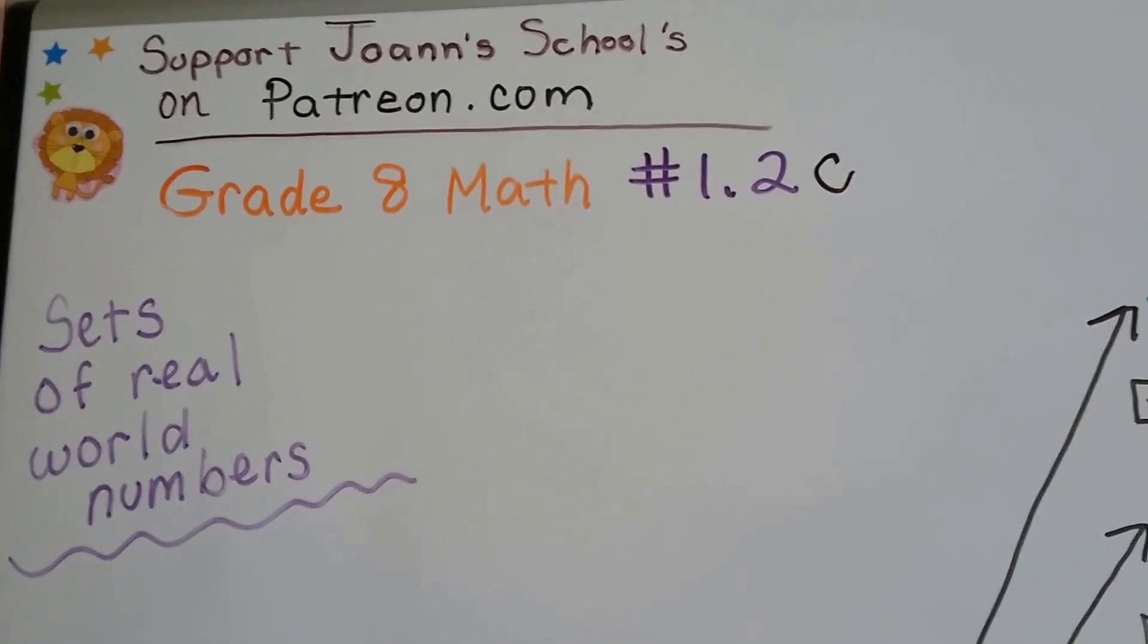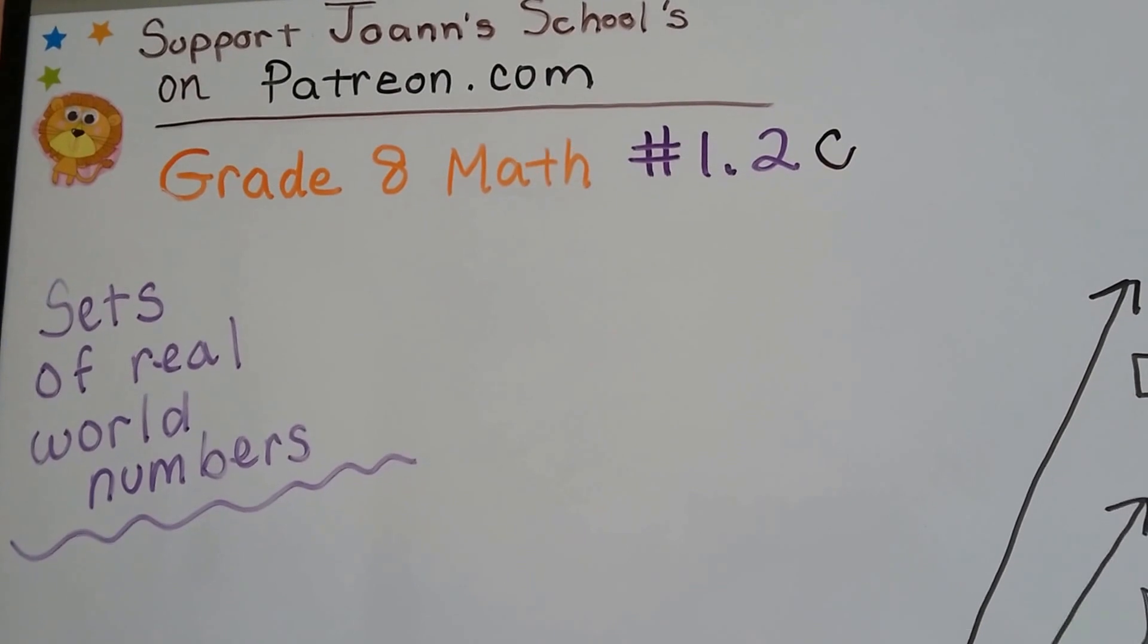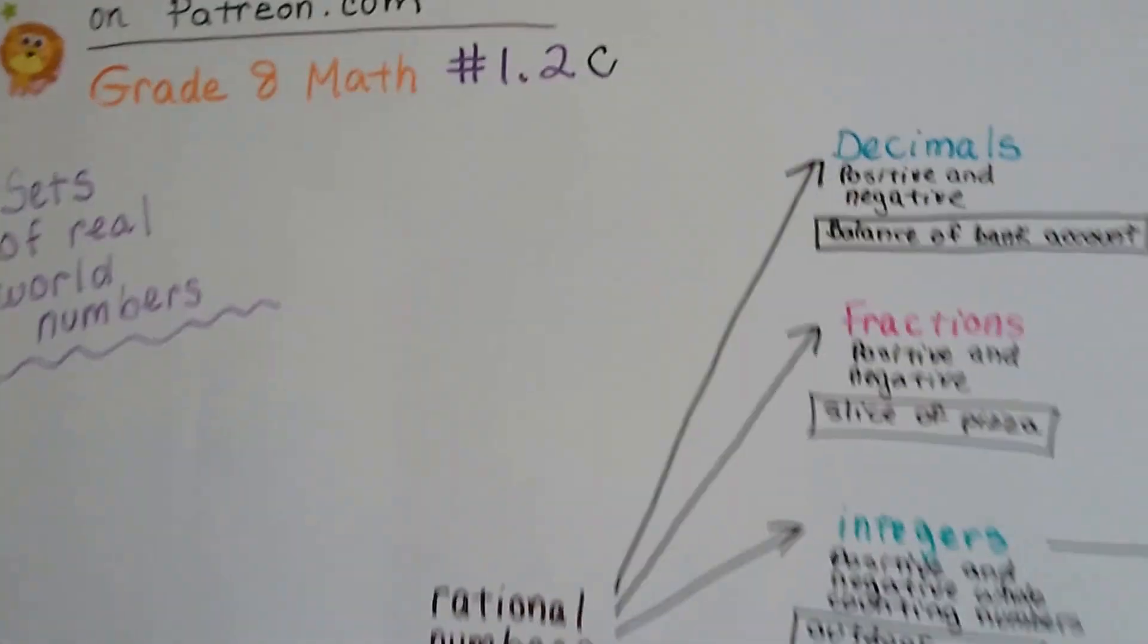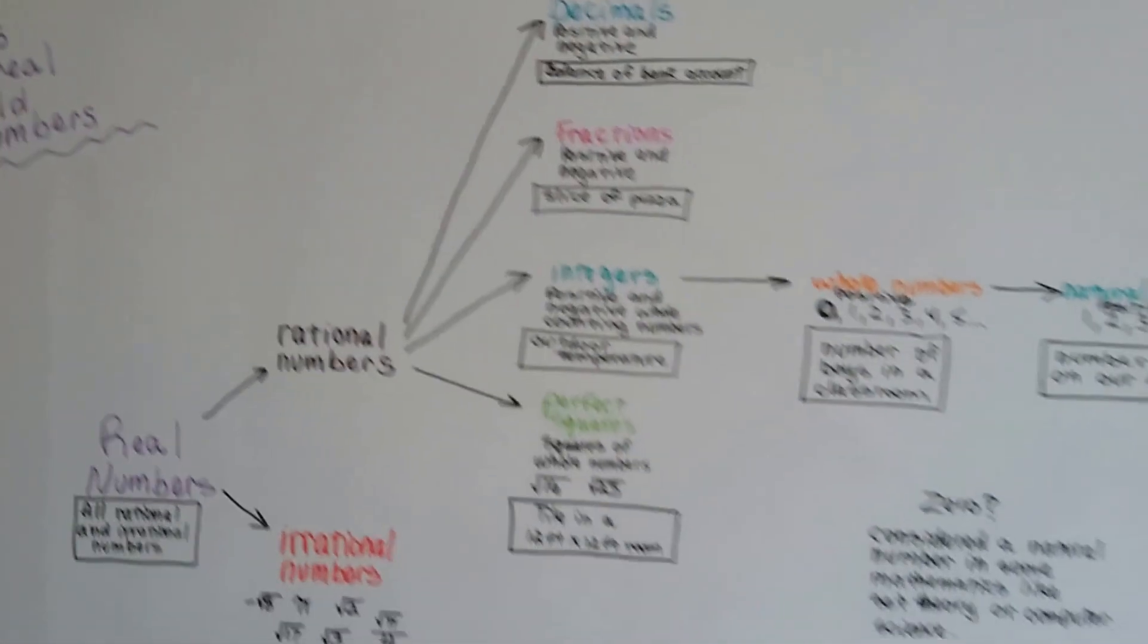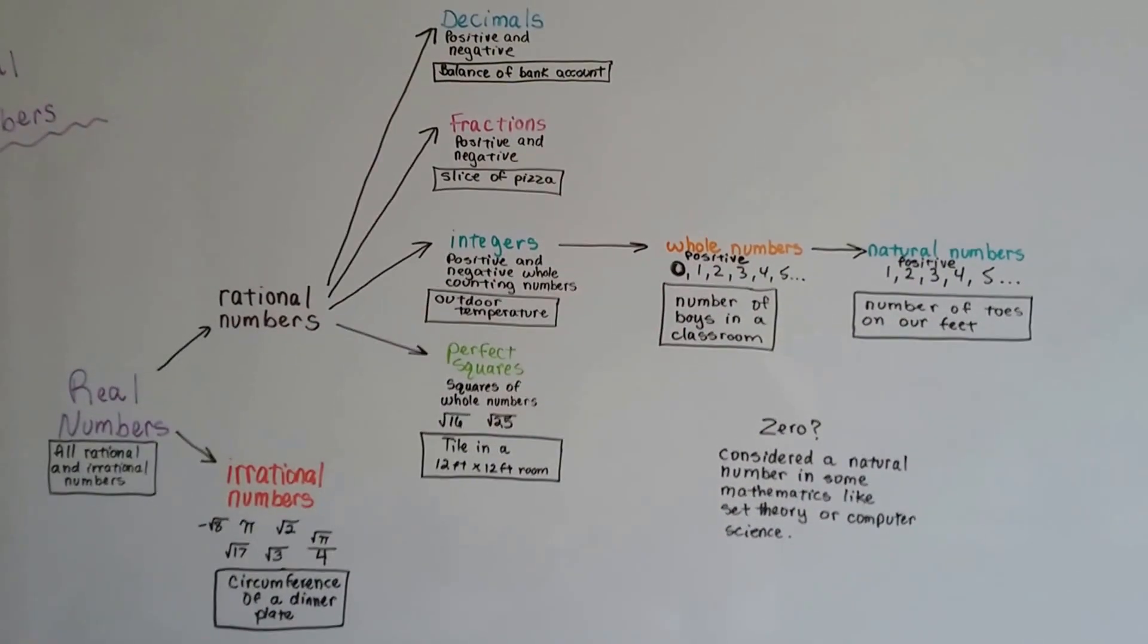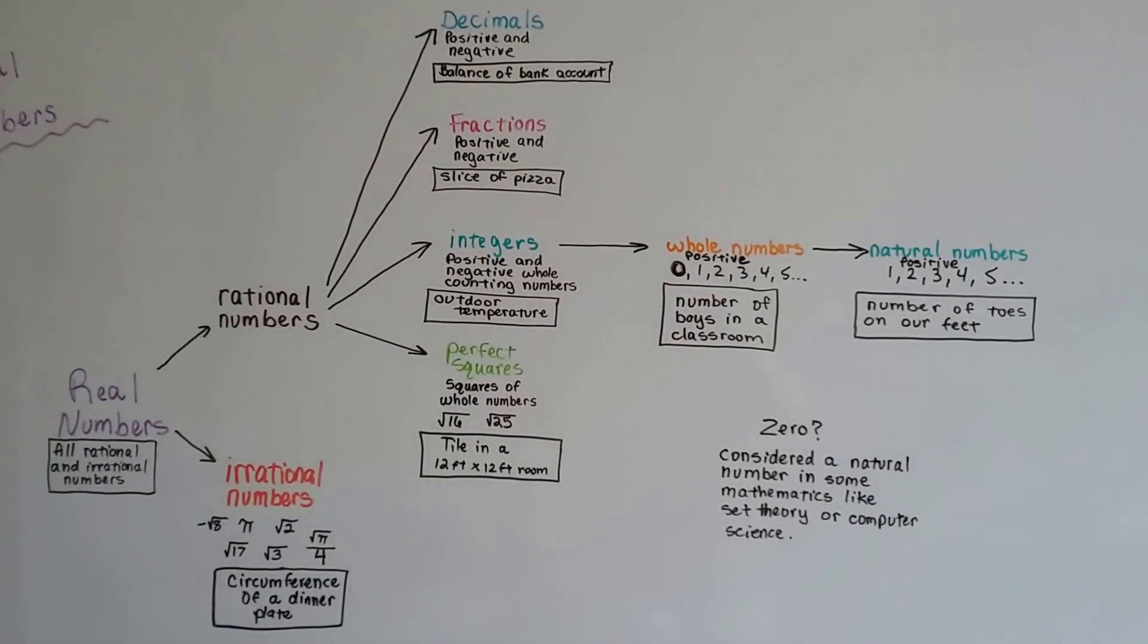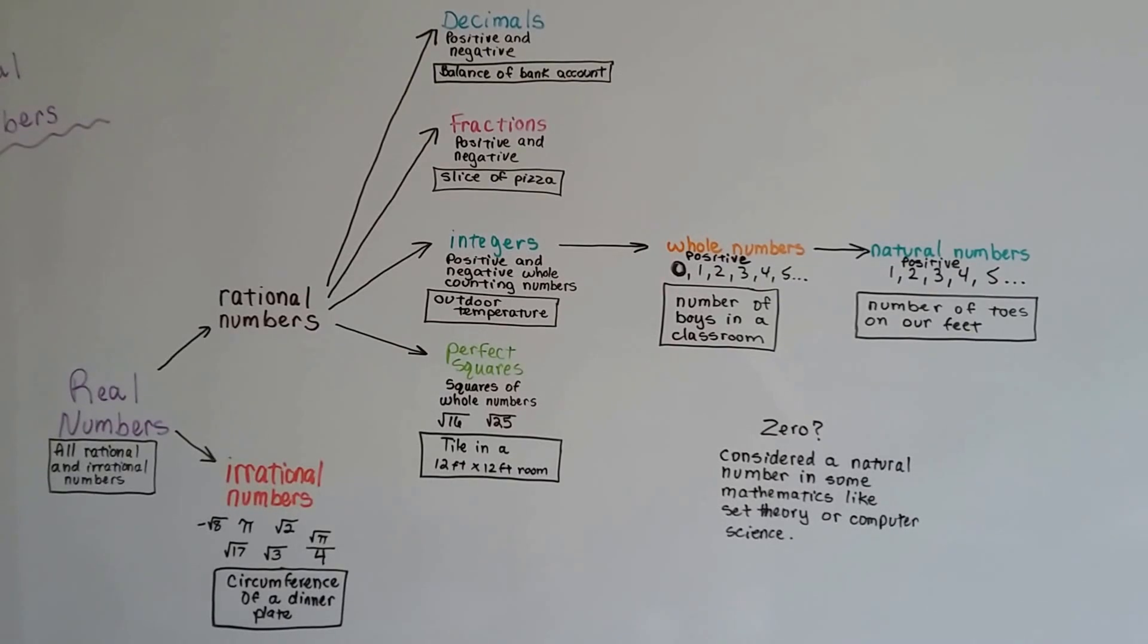Grade 8 math number 1.2c sets of real-world numbers. I made a chart similar to this yesterday and posted it on Twitter. This one's a little more detailed because it explains how each of these are numbers of the real world.